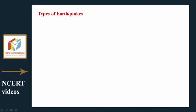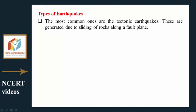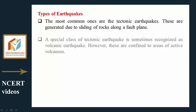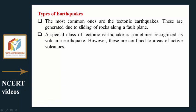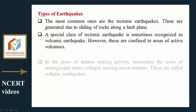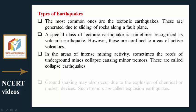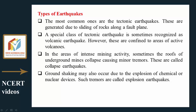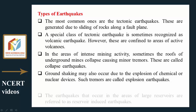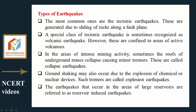Types of earthquakes: The most common are tectonic earthquakes, generated due to sliding of rocks along a fault plane. A special class — volcanic earthquakes — is confined to areas of active volcanoes. In areas of intense mining activity, collapse of underground mine roofs causes minor tremors called collapse earthquakes. Ground shaking due to explosion of chemical or nuclear devices causes explosion earthquakes. Earthquakes occurring in areas of large reservoirs are referred to as reservoir-induced earthquakes.